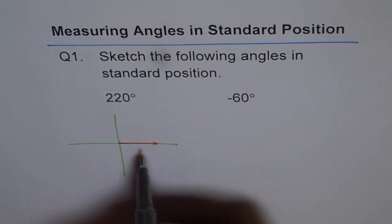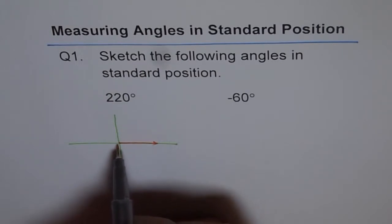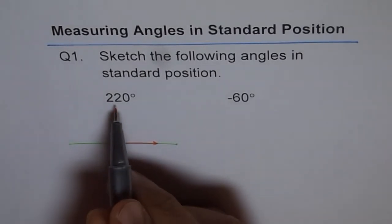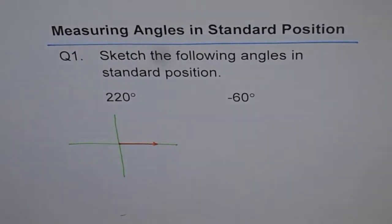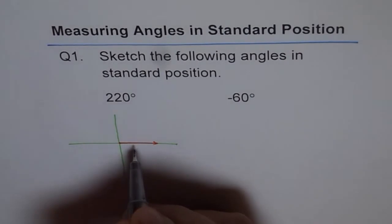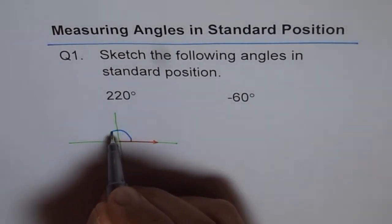That means from initial arm, the terminal arm rotates around origin. So it's positive. Positive means rotating counterclockwise. So it rotates counterclockwise and goes.